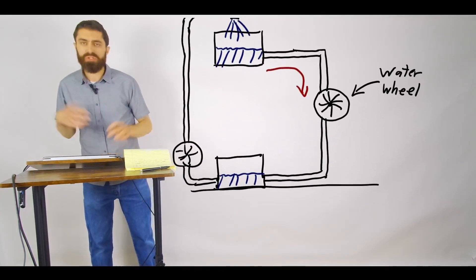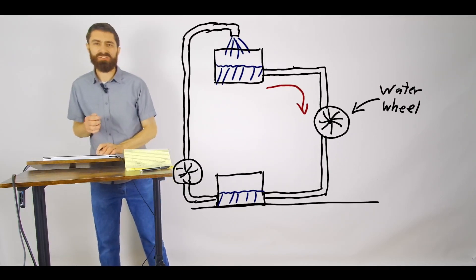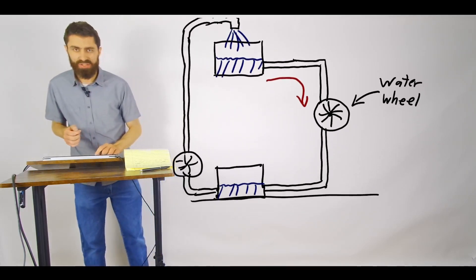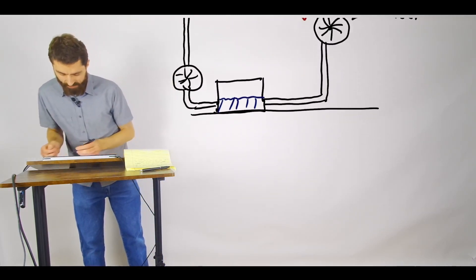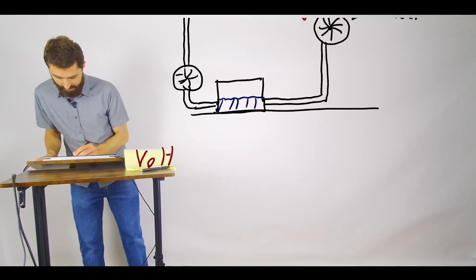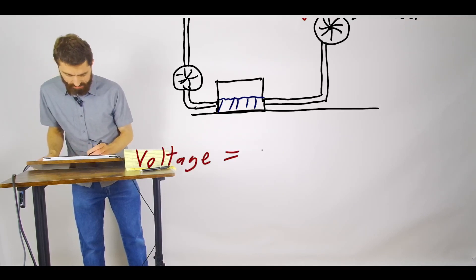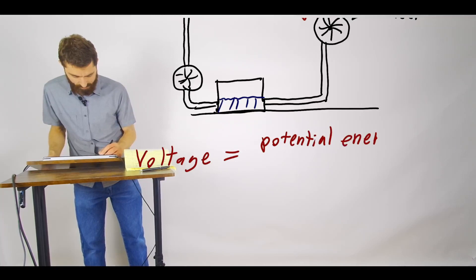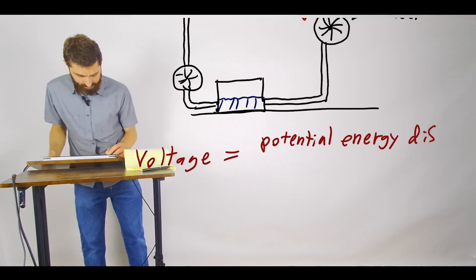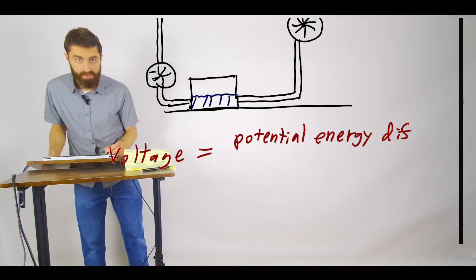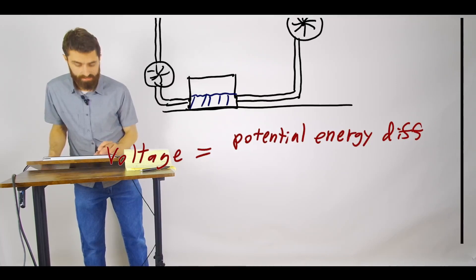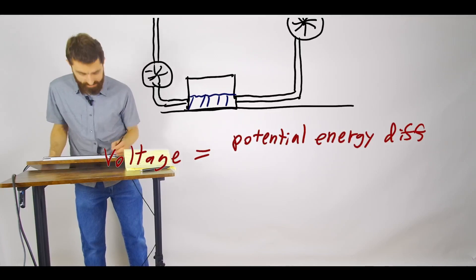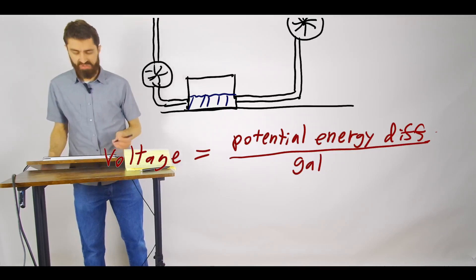So voltage for water circuits—but it's actually very similar to voltage for electric circuits as we'll see. But essentially it would be the potential energy difference per gallon of water, let's say.